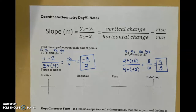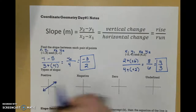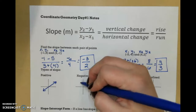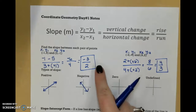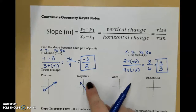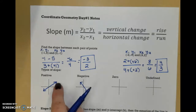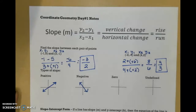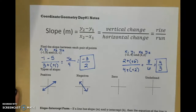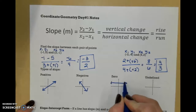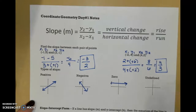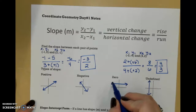Now we do have different types of slopes. We have positive slope, which is where our line would be increasing. We have negative slope, where it would be decreasing. So this negative 3 over 2 would be a negative slope, so our line would slant downward. And this positive 4 over 3 is a positive slope, so our line would go upward. And then we have two other kinds of slopes called zero and undefined. Zero is a horizontal line, and an undefined slope is a vertical line.